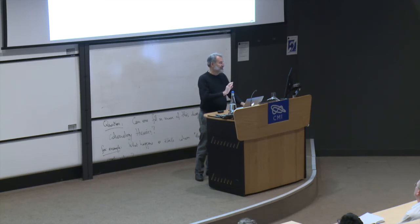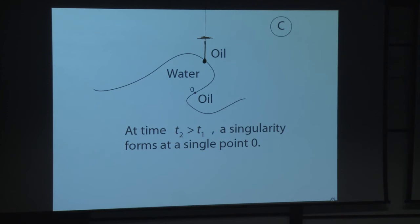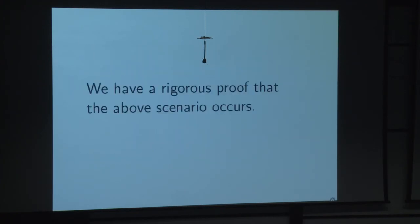Notice: I said the interface is C³ but not C⁴. That's different from saying the parametrized interface is C³ but not C⁴ — one could imagine the interface staying smooth while the parametrization goes bad. That's not what's happening here. The interface itself goes bad. And we have a rigorous proof that all of this happens.